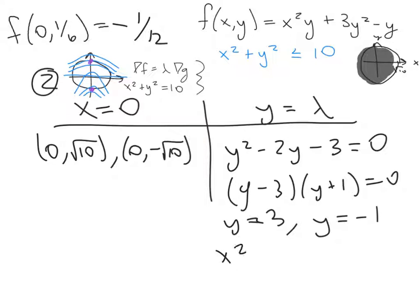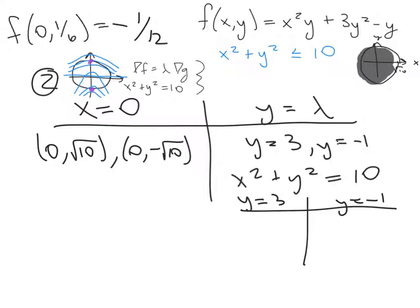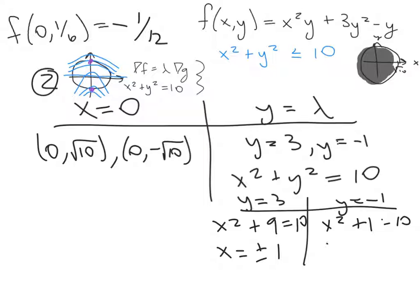Using x² + y² = 10 to find x: when y = 3, x² = 1 so x = ±1; when y = −1, x² = 9 so x = ±3.